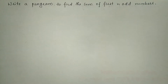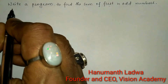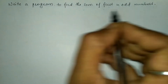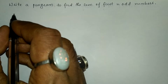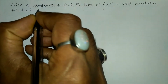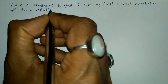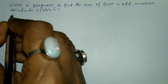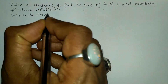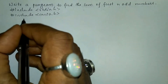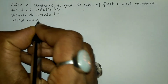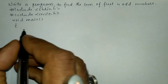Hello and welcome to Vision Academy. My name is Hanmanth Ladwa and in this video we are going to write a program to find the sum of first N odd numbers. Let us write the preprocessor directives: hash include in angular brace, standard input output dot h header file, and the next preprocessor directive is hash include in angular brace, console input output dot h header file. Let us write the void main function with curly open brace.